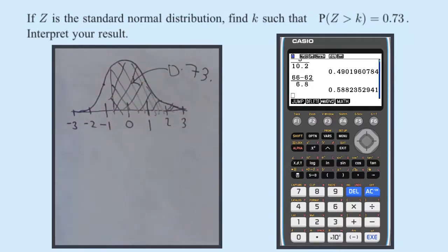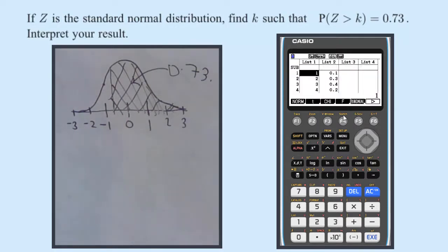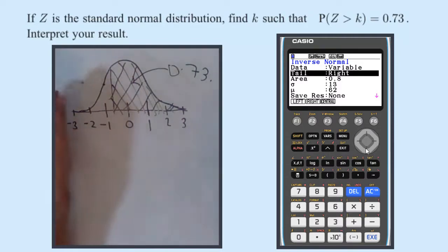So if we have a probability and we're finding a value that makes the probability, I need to go to the calculator menu stats distribution normal inverse normal and variable right tail.